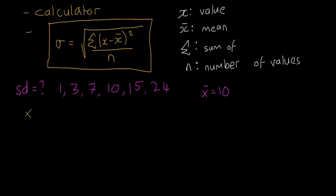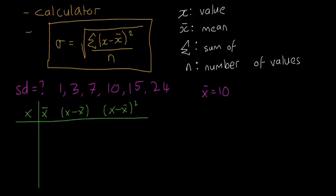So we're going to write x. We're going to write x-bar. Then we're going to have x minus x-bar. And we're going to have x minus x-bar squared. And then we're just going to add all those together. So you'll see how this kind of makes things easier. So first, I'll just make a table here.